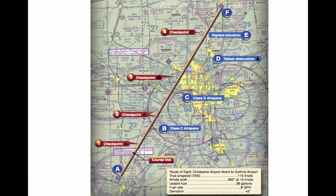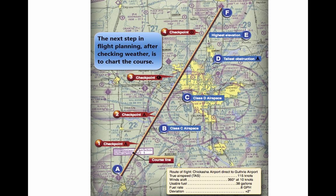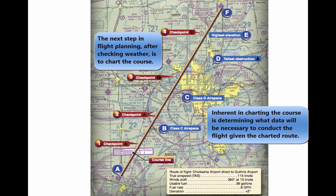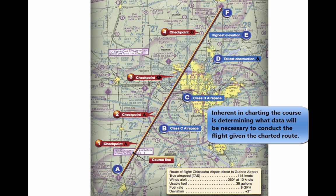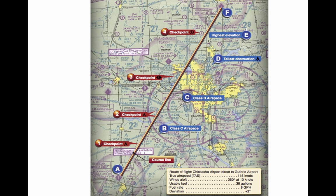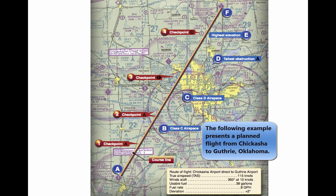Charting the course. Once the weather has been checked and some preliminary planning done, it is time to chart the course and determine the data needed to accomplish the flight. The following sections provide a logical sequence to follow in charting the course, filling out a flight log, and filing a flight plan. In the following example, a trip is planned based on the following data and the sectional chart excerpt in this figure.